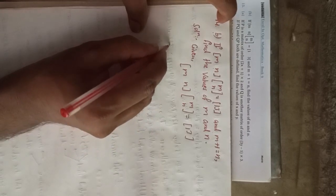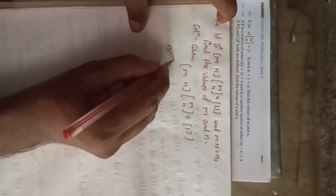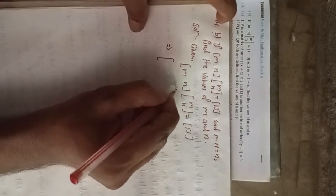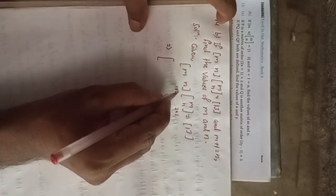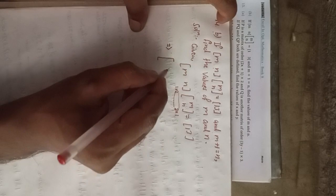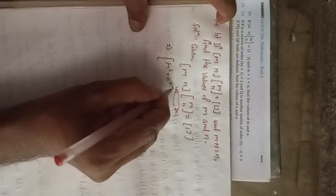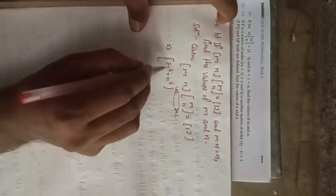While solving this, when we multiply: the first matrix has one row and two columns — that is a 1×2 matrix — and the second matrix has two rows and one column — that is a 2×1 matrix. So the result will be a 1×1 matrix, which means we get only one element: m·m plus n·n, so m² plus n², and this is equal to 13.